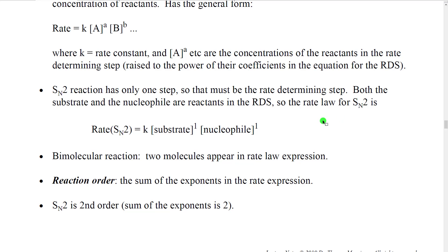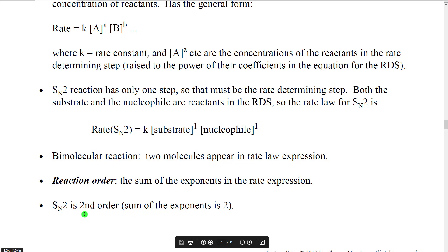Scientists who study kinetics have ways to describe the form of these rate laws. For example, they say that this is a bimolecular reaction because if we look at the rate law, there are two molecules that appear in the rate law expression. That's where the SN2 name comes from. Another thing that's often discussed is the reaction order. The reaction order is the sum of the exponents on these concentrations. In this case, we have an exponent of one added to an exponent of one, giving an exponent of two — so it is called second order. SN2 is a second order reaction.